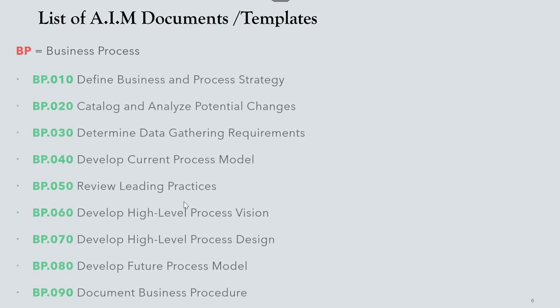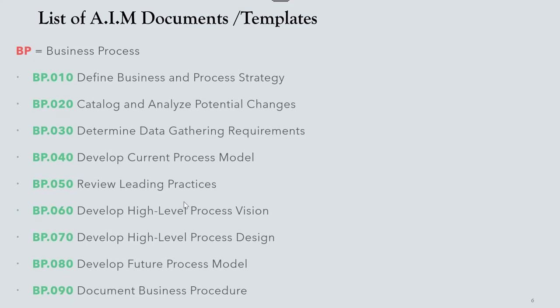All of these documents or templates are optional — you can use them or not. For example, within PP you can use PP40, PP60, or PP70. It is not required to use all of them. PP80 develops the future process model; others define business and process strategy, and so on.